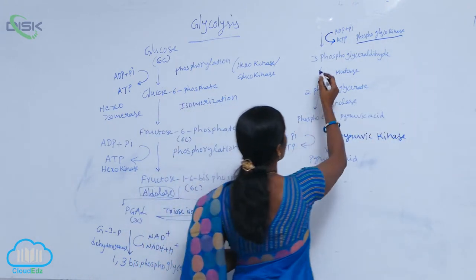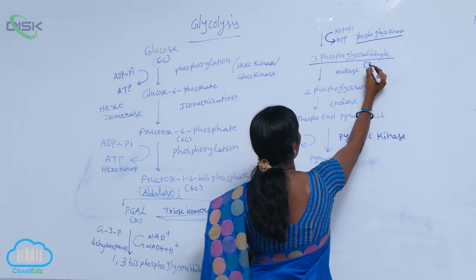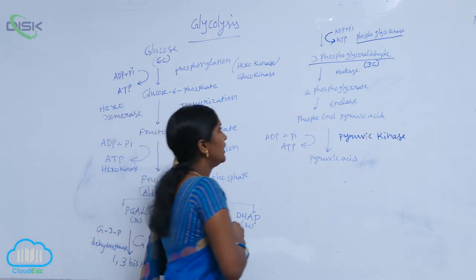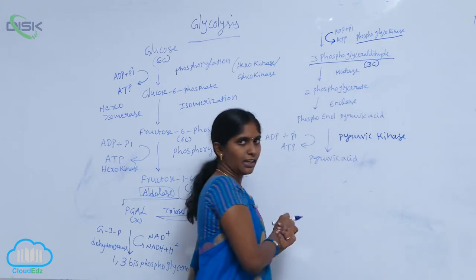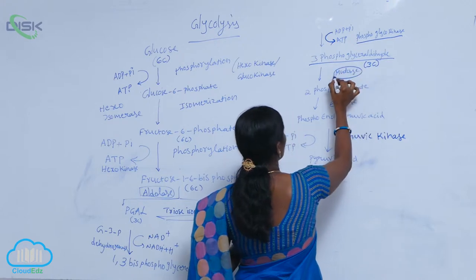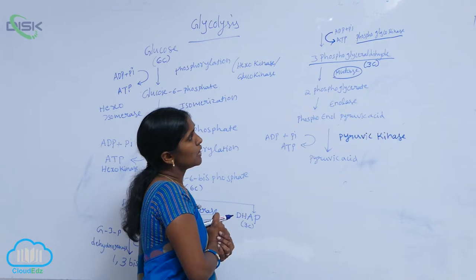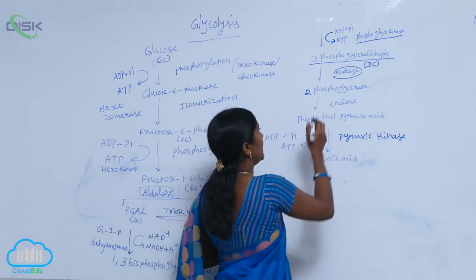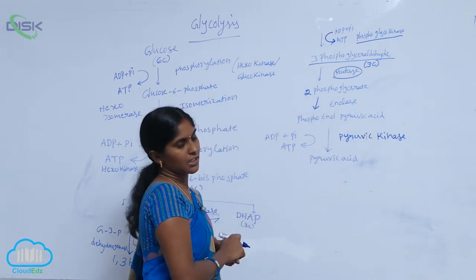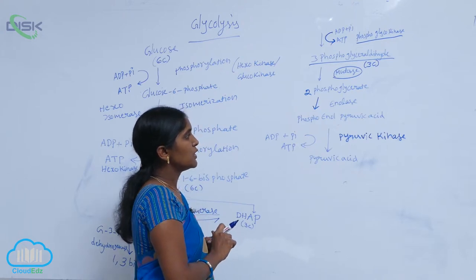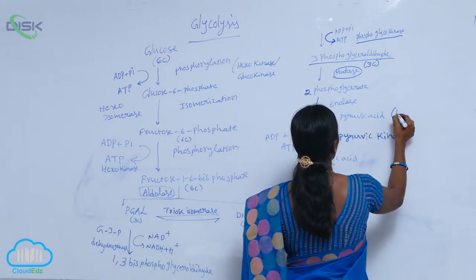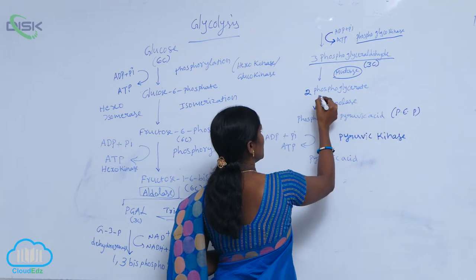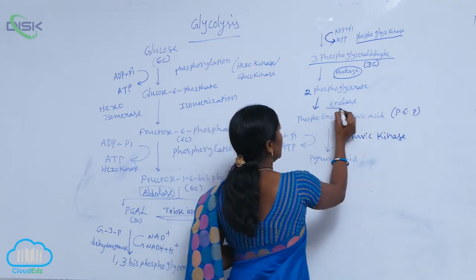3-phosphoglycerate contains 3 carbons. It is then converted into 2-phosphoglycerate in the presence of the enzyme mutase, so the mutase enzyme mediates this conversion. Then the enzyme enolase mediates the formation of phosphoenolpyruvic acid, PEP, from 2-phosphoglycerate.